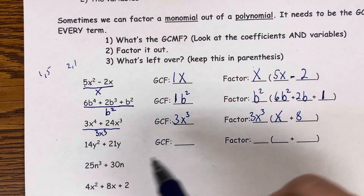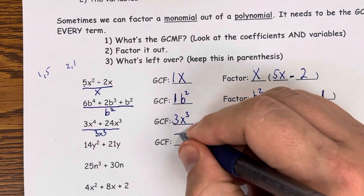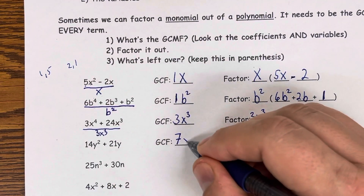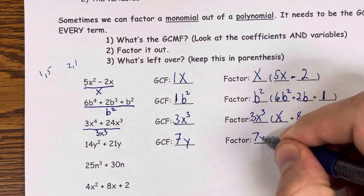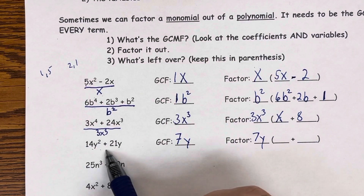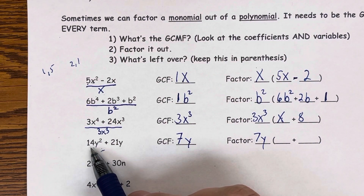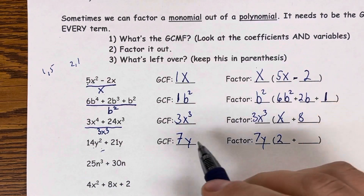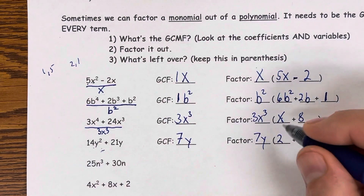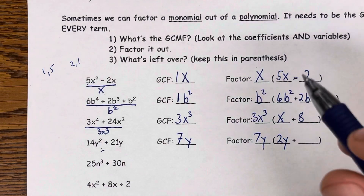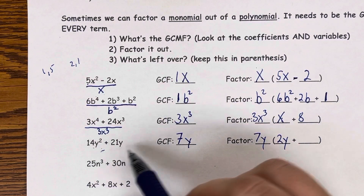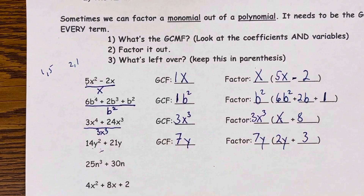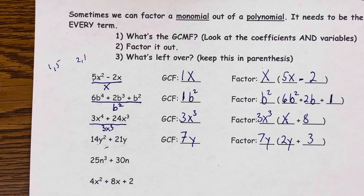For 14y² + 21y: 7 goes into both 14 and 21 — that's the greatest common factor. The smallest exponent for the y's is y to the first. So I'm taking out 7y. 14y² ÷ 7y = 2y, and 21y ÷ 7y = 3. You don't have to write out the division every time if you're able to do it in your head.